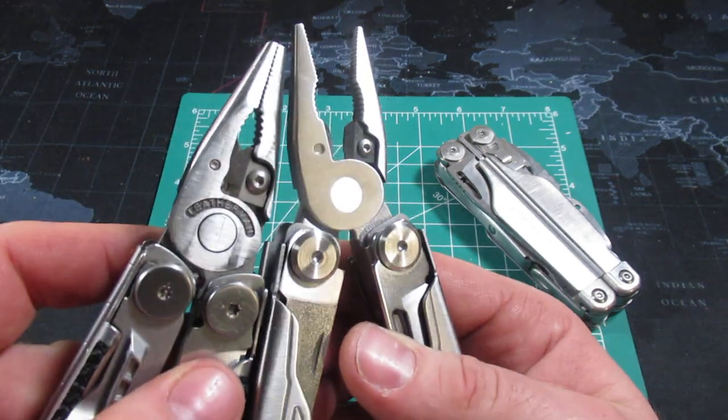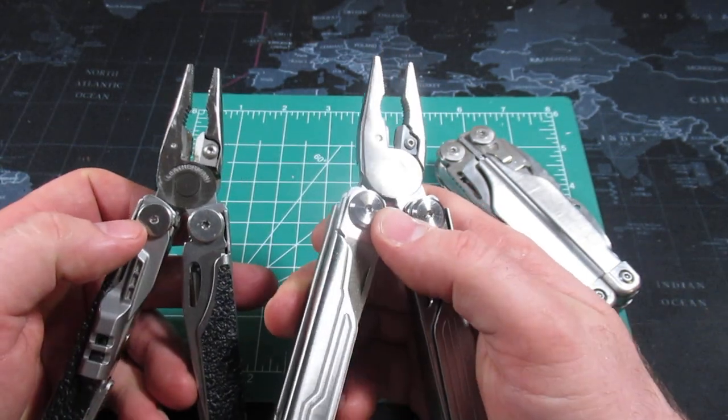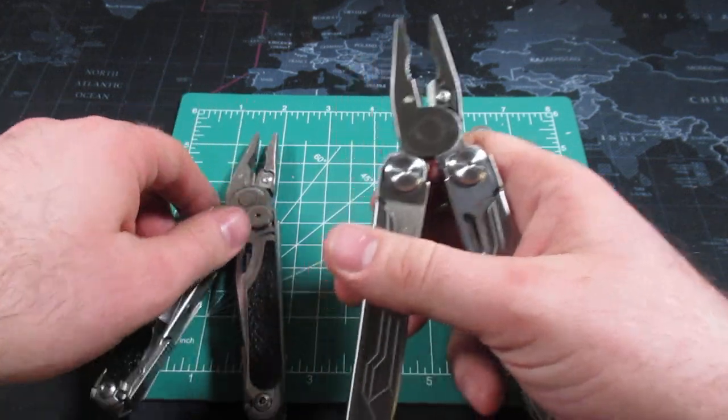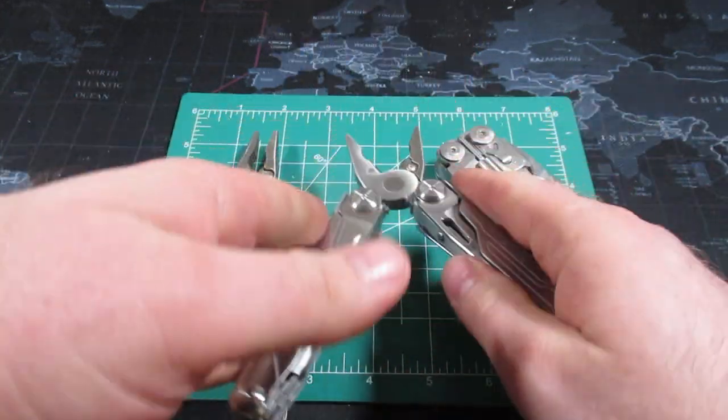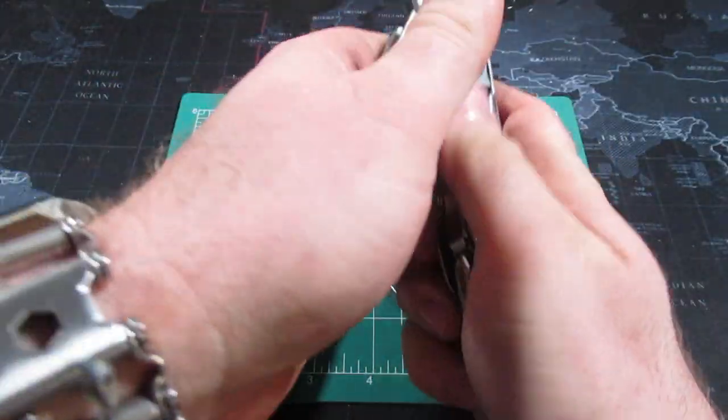They are both replaceable. You will notice that the Nextool Captain is actually different than both the Wave and the Surge in that it is spring-loaded pliers. I actually like that the Surge and Wave don't have spring-loaded pliers, but I don't mind spring-loaded pliers. They're okay as well.